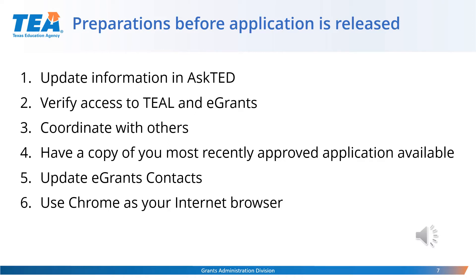Coordinate with other staff members and set up time to communicate with those who have information that will help you complete the application. Obtain a copy of the most recently approved 2021 SPED application federal. Review the application and any negotiation items, and use it to help complete the 21-22 application. Coordinate and update eGrant contacts for SPED, ESSA, and Perkins.